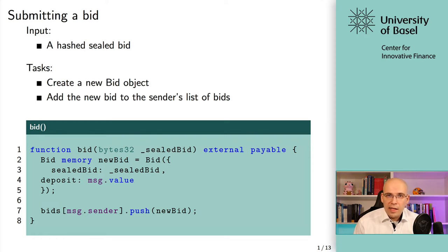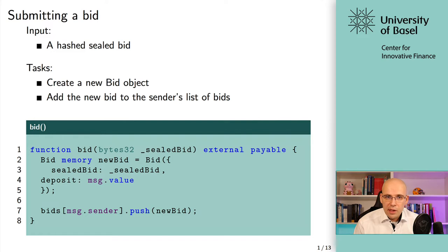When an address only has one bid, it's just that one value. But since one address could potentially have multiple bids, we have to store that in an array — an array of structs — because there are always multiple values stored: the sealed bid and a deposit for each bid. That's the basic idea. With `push`, you create a new element at the end of the array, and it's going to be stored on the blockchain.